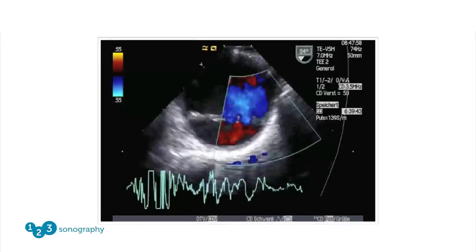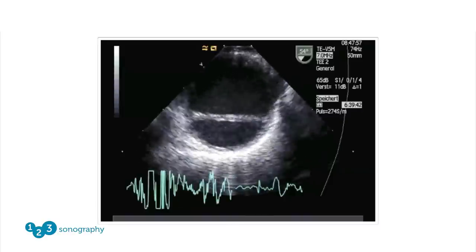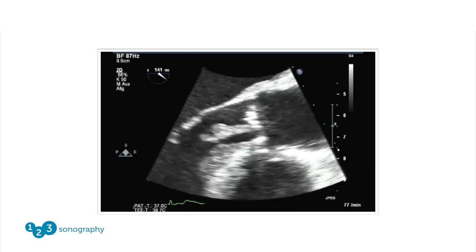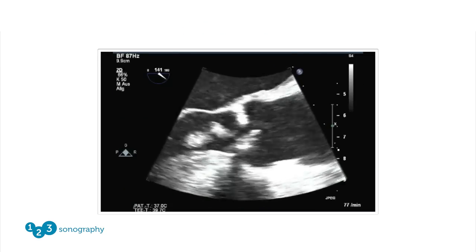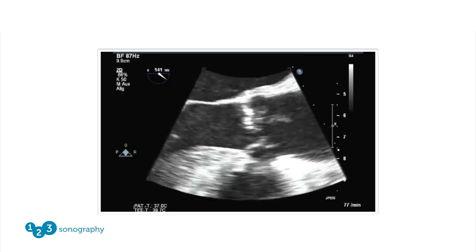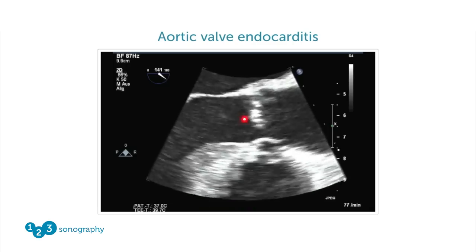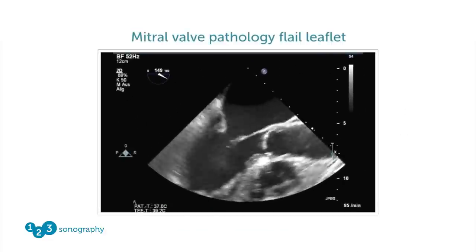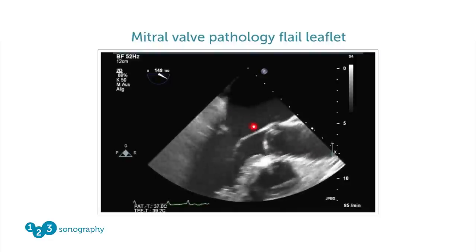Another advantage is that we can see the aorta — a beautiful example of aortic dissection. One of the major advantages of TEE is to diagnose vegetations, in other words, endocarditis. This is a large mobile structure on a calcified aortic valve. TEE has greatly expanded our diagnostic potential for diagnosing endocarditis.